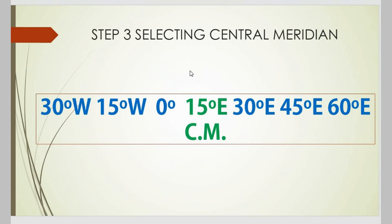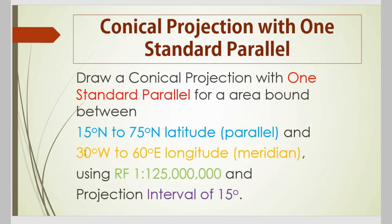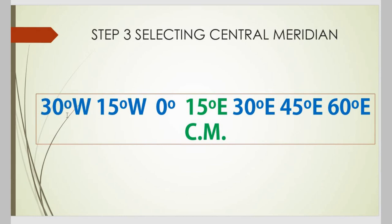In step three, we select the central meridian. Using the interval of 15 degrees and the range of meridians from the question, we list all possible meridians: 30°W, 15°W, 0° (the prime meridian), 15°E, 30°E, 45°E, and 60°E. Leaving three values on each side, the middle value — 15 degrees east — is our central meridian.